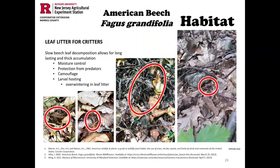Leaf litter is so important for our little critters. In addition to moisture control, it provides protection for overwintering, places to hide and camouflage themselves. Even larval hosting — some insects require specific leaf litter to curl up in over winter, and many of our bees need to burrow under leaf litter into the soil to survive through winter, specifically our queen bees.